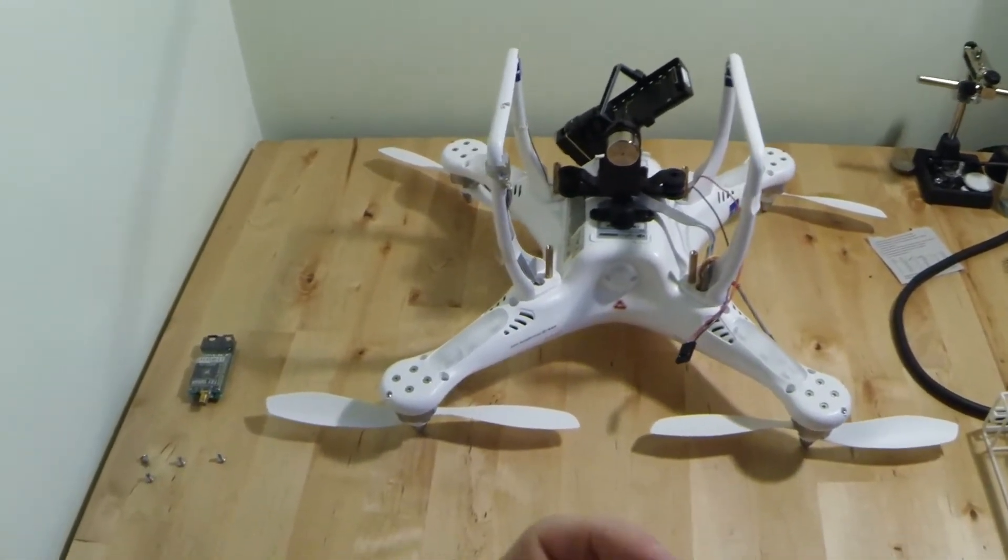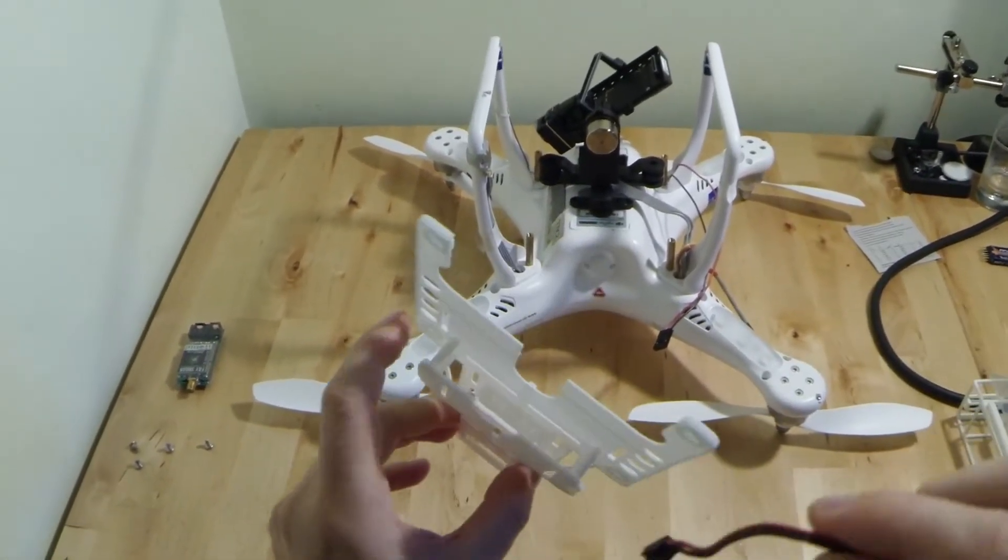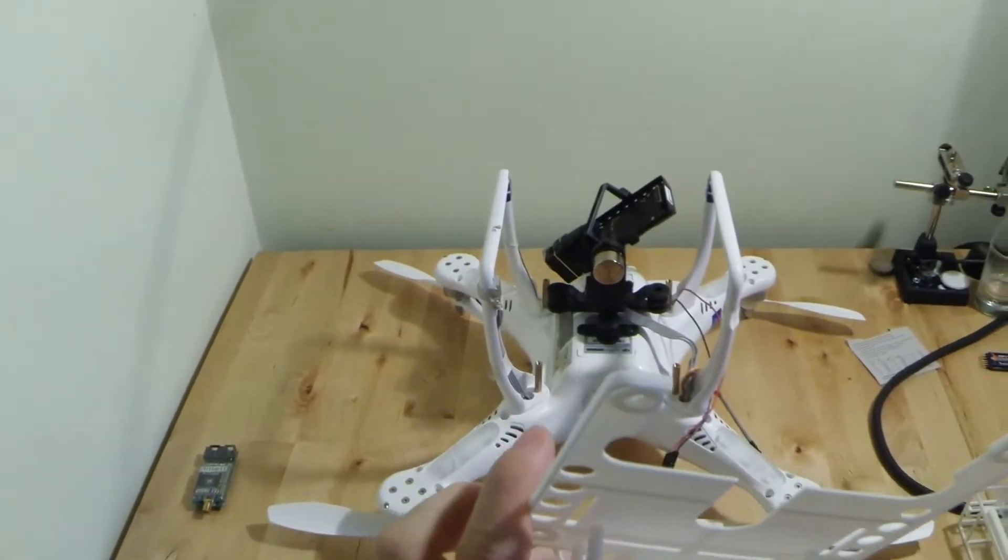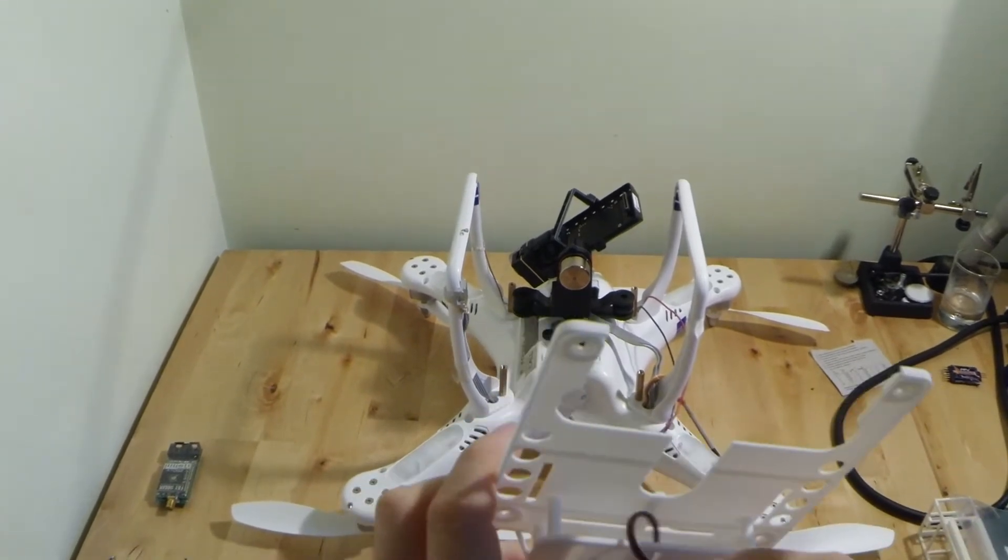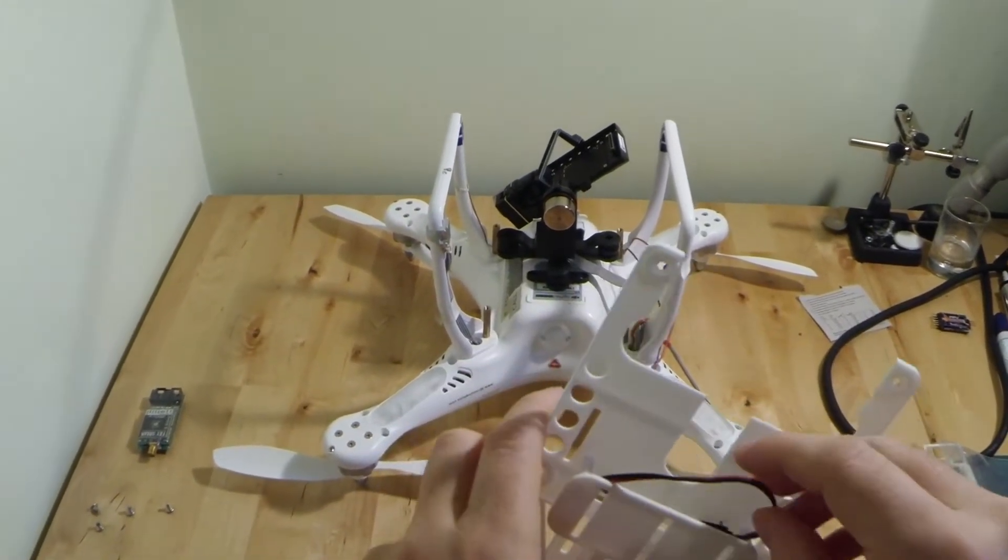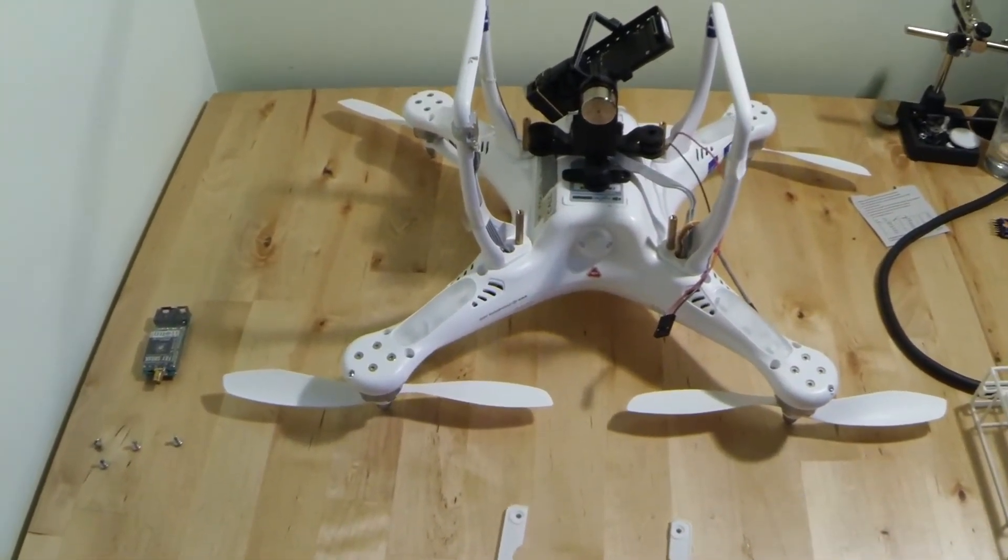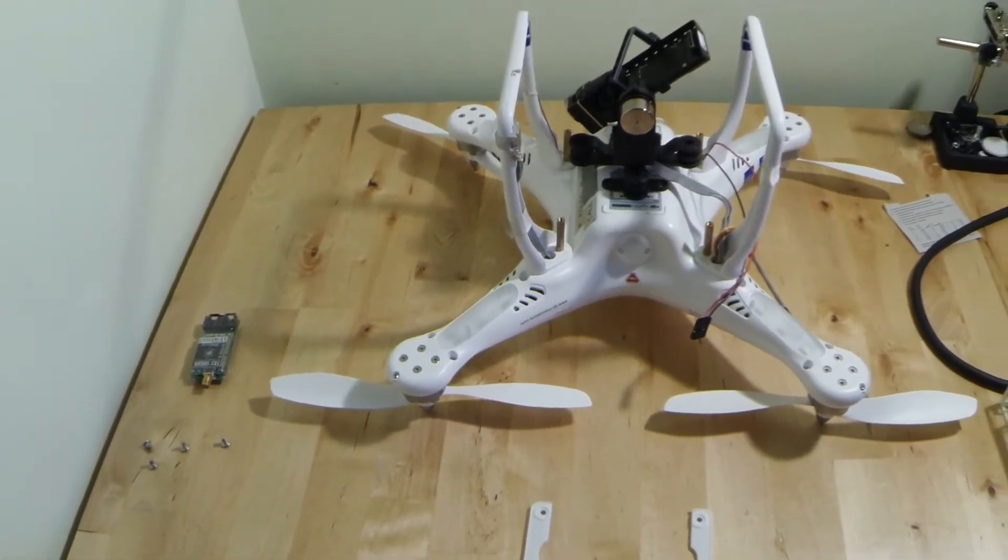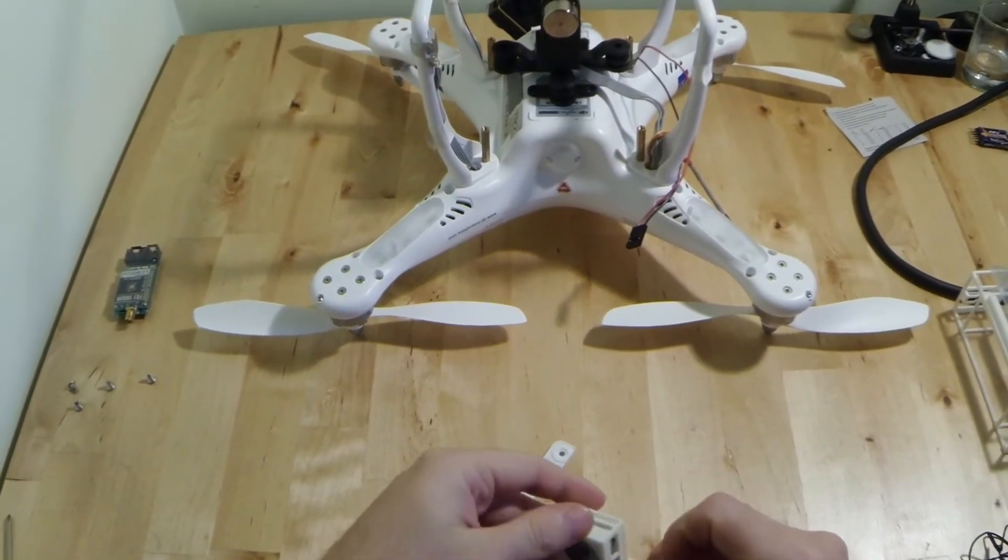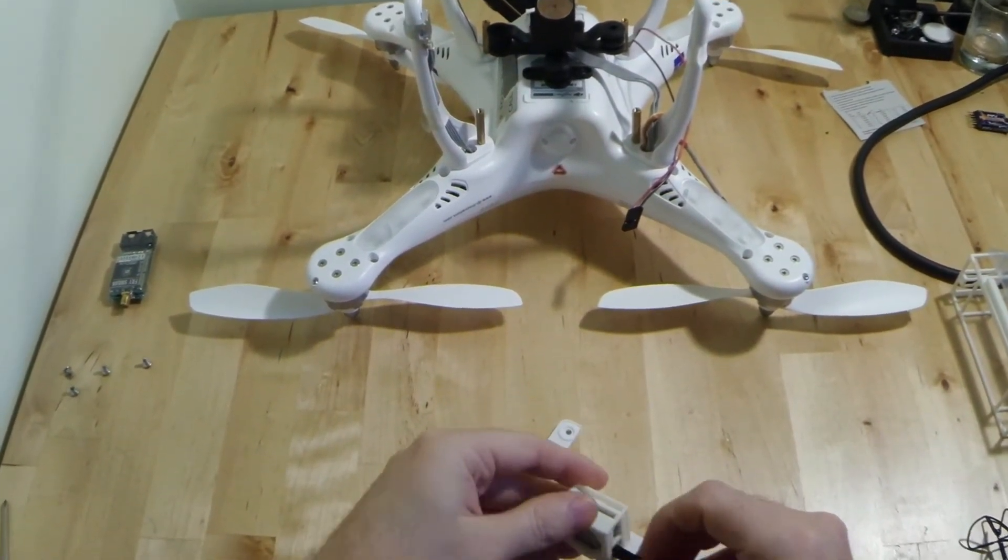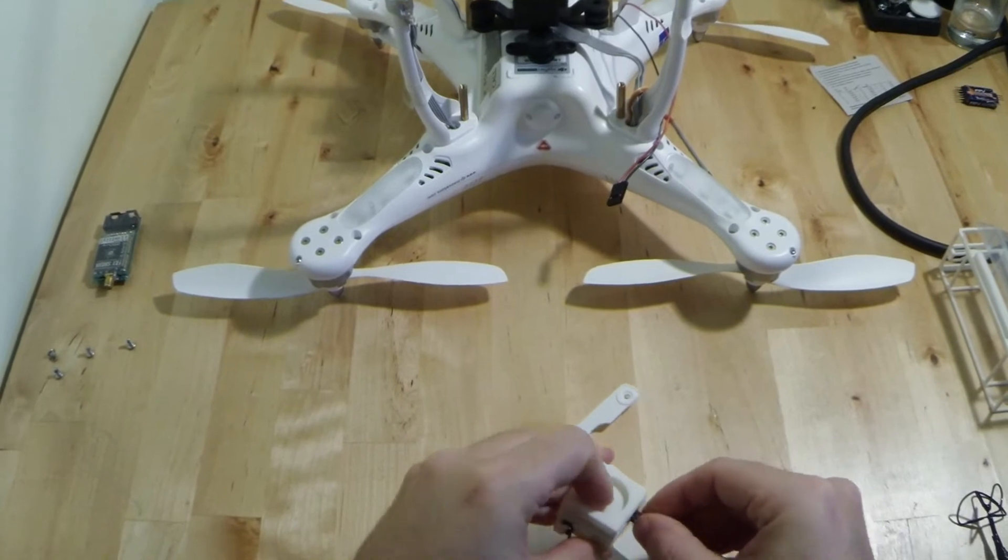So, the first thing that we want to do is we want to get our power filter and we want to take our power cable and we want to just feed the power cable through the back of the VTX holder. That will just make life a little bit easier when it comes to actually fitting.